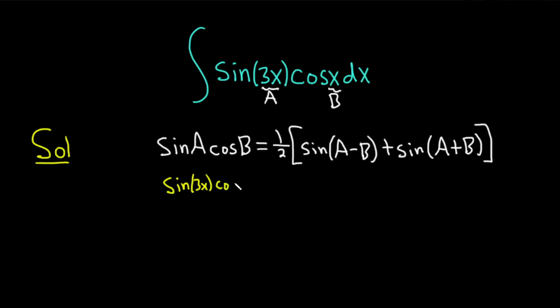times the cosine of x and that's equal to 1 half bracket sine of, so a minus b, so 3x minus x and plus sine a plus b, so that'll be 3x plus x. And you can skip steps. I just wanted to show every single step so you see it. So you have sine of 3x minus x plus sine of 3x plus x. We have the 1 half on the outside.